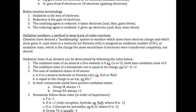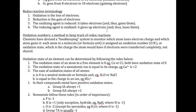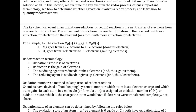There is terminology you want to get familiar with with respect to redox: oxidation means the loss of electrons, or the giving away of electrons. So in this case, magnesium is oxidized. Reduction means the gain of electrons, so the oxygen is actually gaining electrons — the oxygen is reduced.